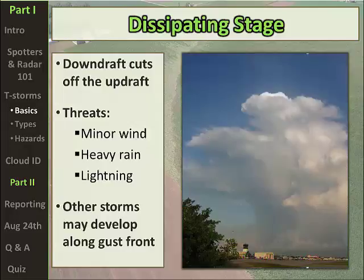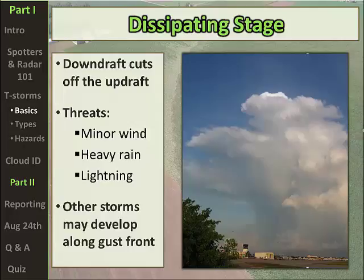Looking at a storm in the dissipating stage, one thing to notice is that the cloud tops — which were very sharp in earlier stages, indicating liquid supercooled water and hail — now have a more frayed, fuzzy appearance. This indicates less liquid supercooled water or ice, as most of the water has come down to the surface and the updraft is no longer strong. By looking at this, we would not suspect severe weather as a high probability — maybe just some isolated damaging wind gusts.